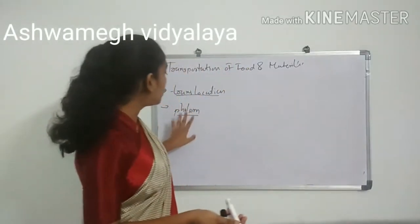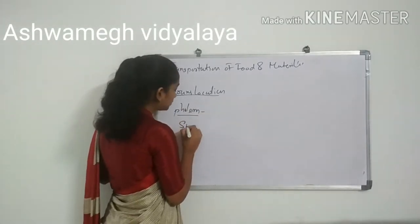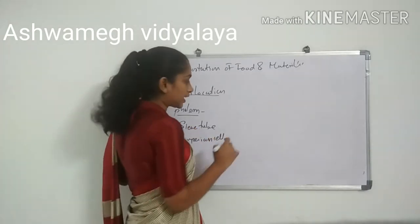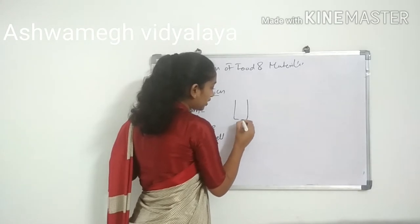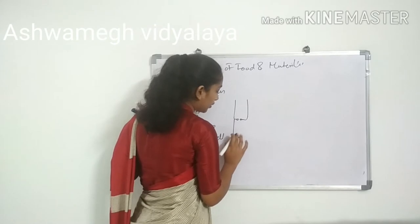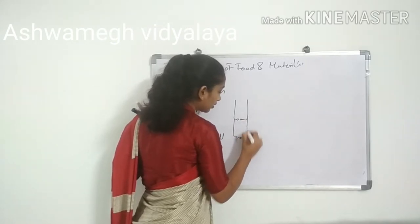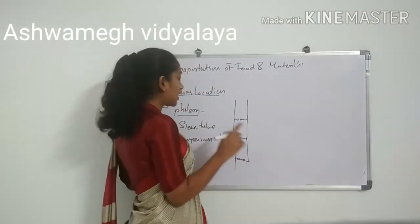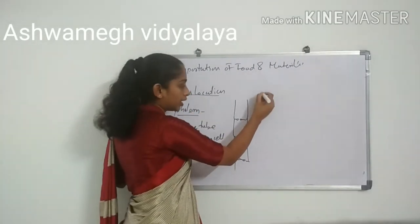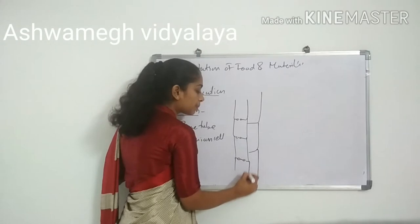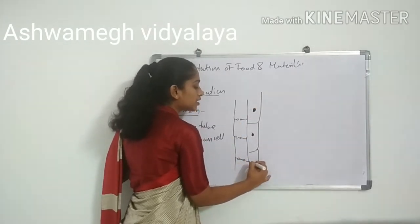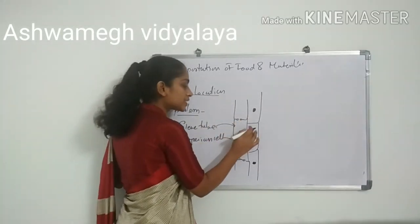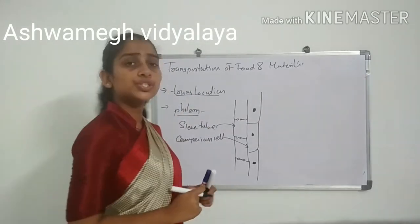Toh student, phloem se hi — aap dekho. Toh phloem mein aapko sieve tubes and companion cell-like structures dekhne ko milte hain. Yeh jo sieve tube hai, is tarah se aapko dekhne ko milta hai. Dhyan rakhna ki plant sieve tubes ke paas nucleus nahi hota hai. Important hai — sieve tubes ke liye dhyan rakhna ki plant sieve tubes ke paas nucleus nahi hota. Uski saari jo functions hain, uski niyantran mein jo companion cell hota hai. Yeh hai sieve tube aur yeh hai companion cell. Toh companion cell jo hai, woh isi functions ko regulate karta hai.